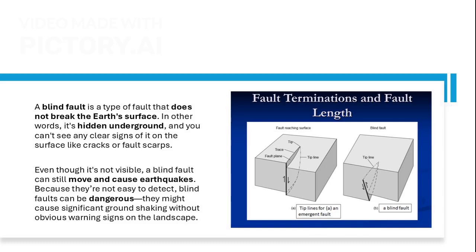Blind faults are hidden beneath the Earth's surface, making them difficult to detect. Despite their invisibility, they can still move and cause earthquakes, posing significant risks without clear warning signs. Understanding blind faults is essential for assessing earthquake hazards and preparing for potential ground shaking.